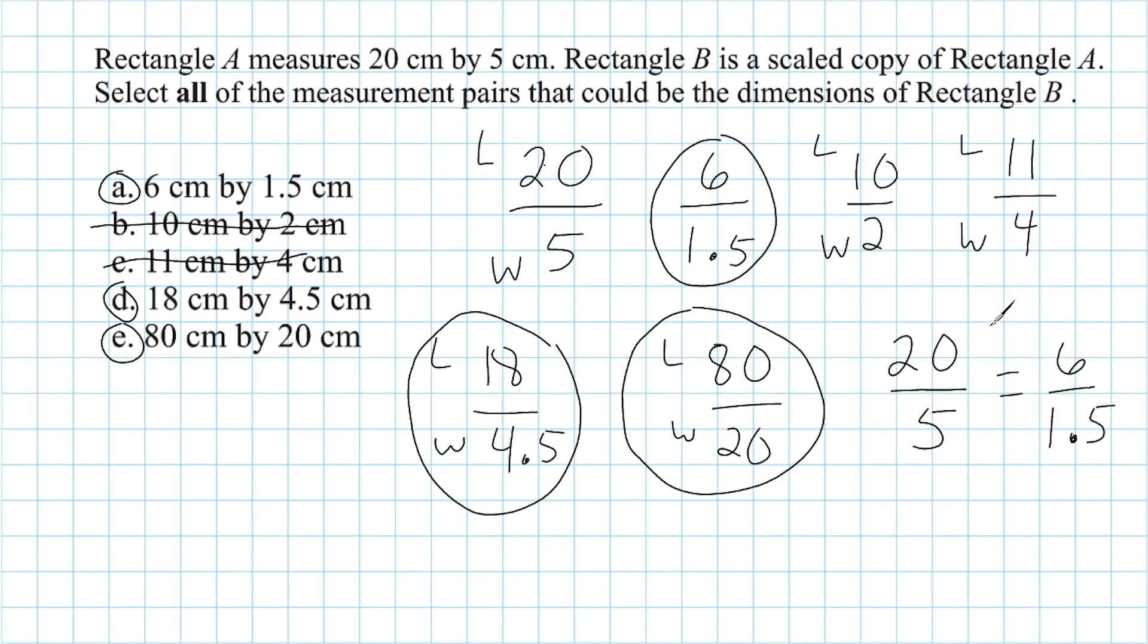Now, let's say I took one of the rectangles that is not a scale copy, like 10 over 2. If we were to cross multiply, notice in this direction we would get 50, and in this direction we would get 40. So we would say that these values are not proportional to each other, so this is not a scale copy.